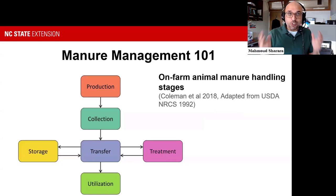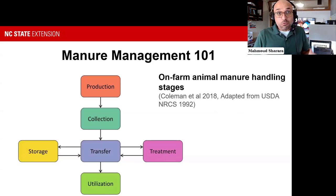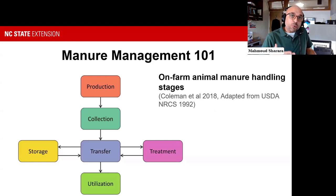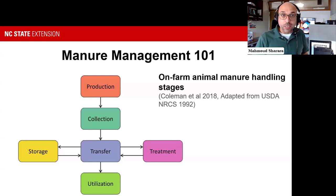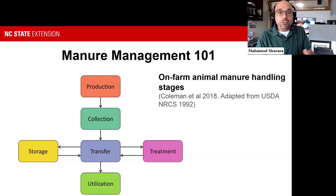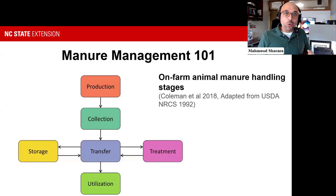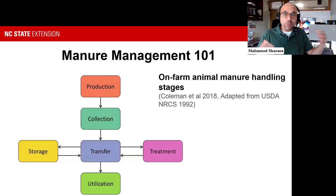These boxes represent the stages or steps of how agricultural waste—or my preference, manure, because that's really what it is—moves through the system. It describes the different stages from production of the manure to collection, transfer to storage, treatment, and ultimately to utilization on cropland. This system can be as simple as a pasture or significantly complex with separation and treatment.